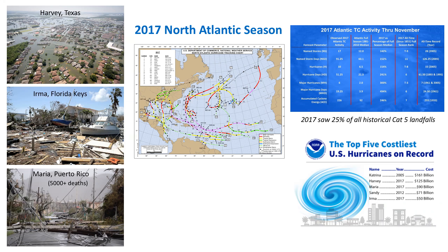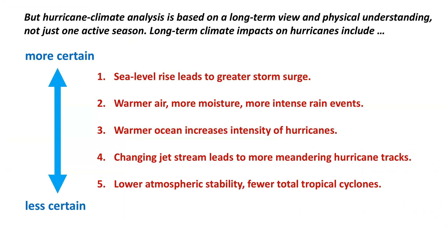In terms of dollar losses on the U.S., three of the top five dollar loss events are from 2017, with Hurricane Harvey at number two at a $125 billion estimate, just behind 2005's Katrina. But hurricane climate analysis should be based on a long-term view and a physical understanding, not just one active season — and so that's what I'm going to do.